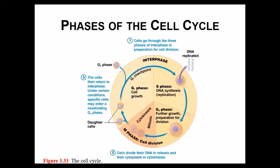Looking at the diagram figure 3.33, both phases are laid out. Interphase is the longest part of the cell cycle, and then you have the M phase or mitosis phase, which is shorter. G1 is a growth phase, S phase is where DNA is being replicated or synthesized, and then G2 is another growth phase getting ready for mitosis.